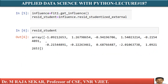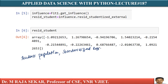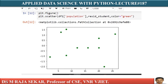Now you can plot student population against standardized residuals. Student population is the independent variable on the x-axis, and standardized residuals are on the y-axis. Using plt.figure and scatter plot with df1 population and resid_student, this is the plot we get.